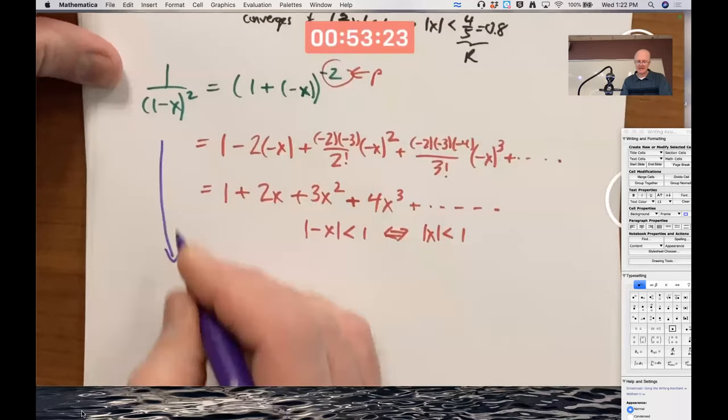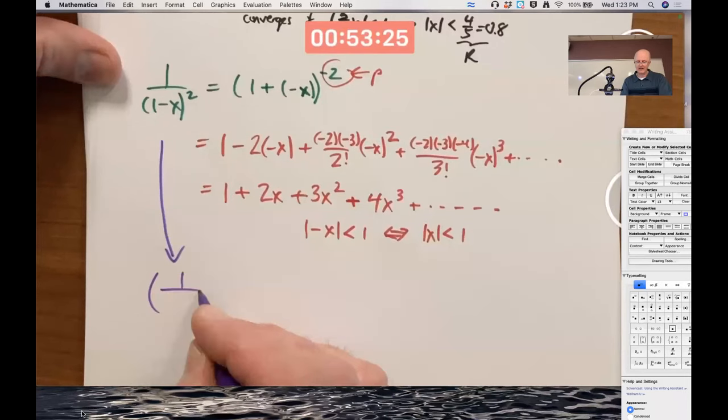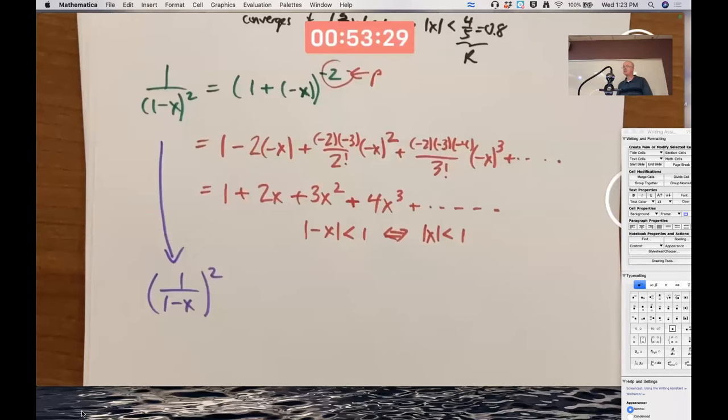Let's think of this function as 1 over 1 minus x quantity squared, which is okay to do, right? Square a fraction, you square the top and the bottom. 1 squared is 1. But wait a minute. That's our old friend, the geometric series. Sum of a geometric series.